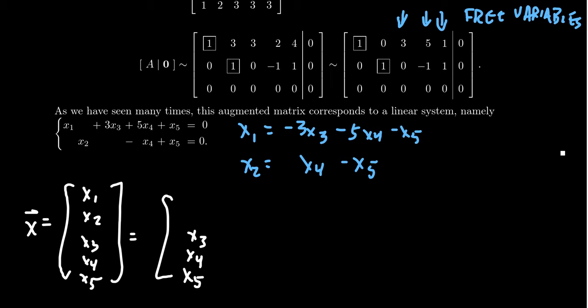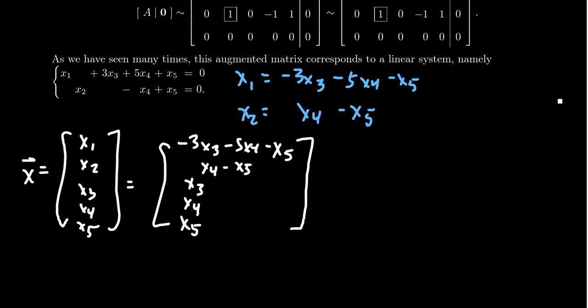x1 will be negative 3x3 minus 5x4 minus x5, and x2 is given as x4 minus x5. So this is the general solution. But this general solution I could decompose into smaller vectors — I could rip it apart into three vectors corresponding to the three free variables.